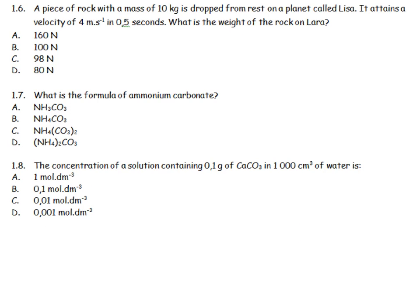A piece of rock with a mass of 10 kilograms is dropped from rest on a planet called Lisa. It attains a velocity of 4 meters per second in 0.5 seconds. What is the weight of the rock on this planet? I can work out the acceleration. V is equal to U plus AT. 4 is equal to starts at 0 plus 0.5A. And therefore, A turns out to be equal to 8 meters per second squared.